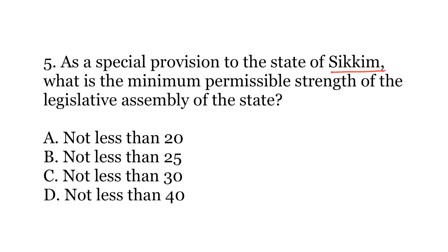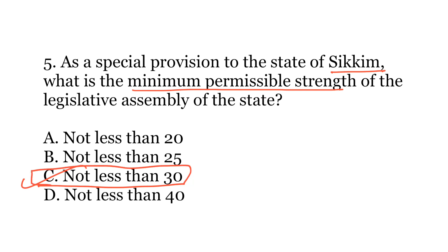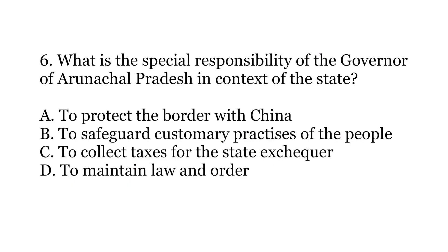Fifth question: As a special provision to the state of Sikkim, what is the minimum permissible strength of the legislative assembly? Options: A) Not less than 20, B) Not less than 25, C) Not less than 30, or D) Not less than 40. The correct answer is C) Not less than 30. The Constitution provides that Sikkim's legislative assembly should not have less than 30 seats. In reality, the legislative assembly of Sikkim has 32 seats, fulfilling this criterion.